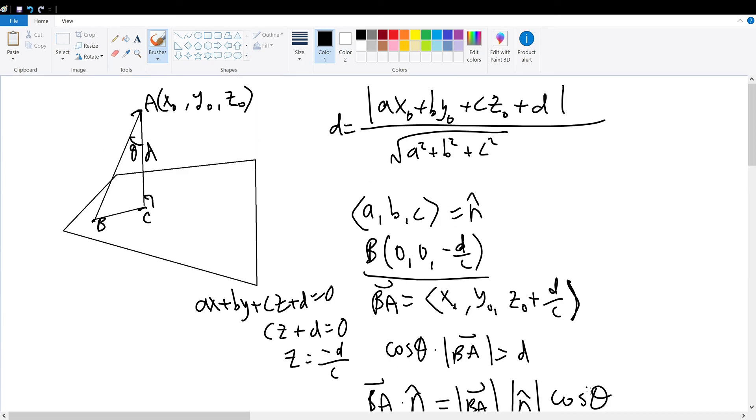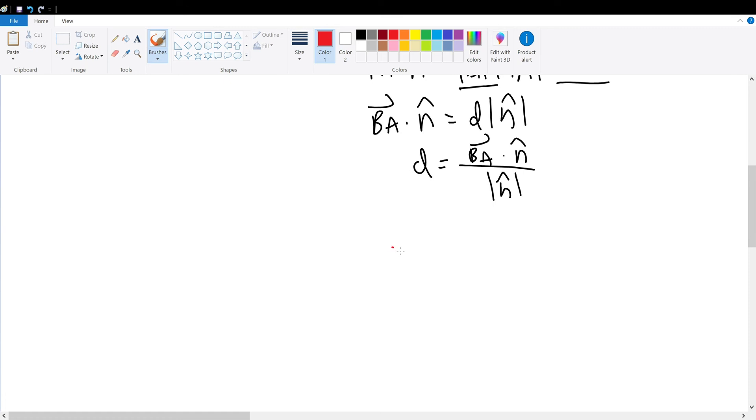And once again, we have found the normal vector to be A, B, C. Hence, the normal vector's magnitude will be equal to the square root of the sum of the components squared, which will be the square root of A squared plus B squared plus C squared.